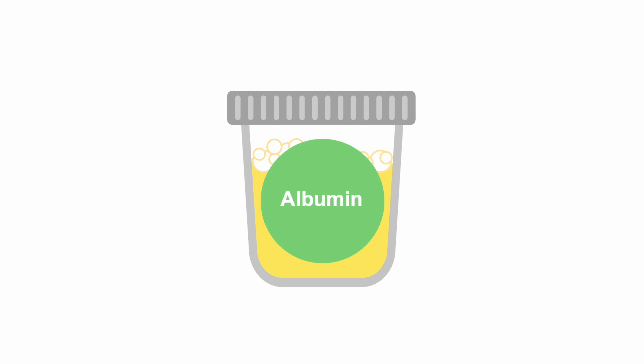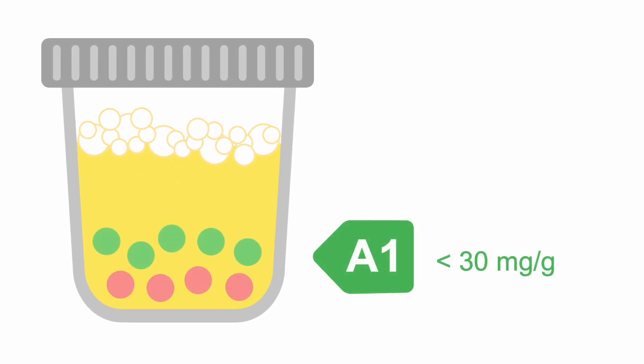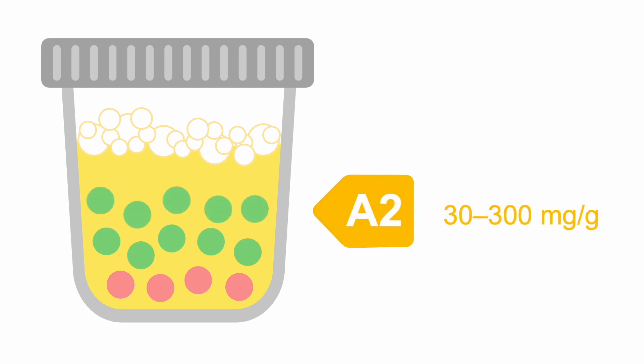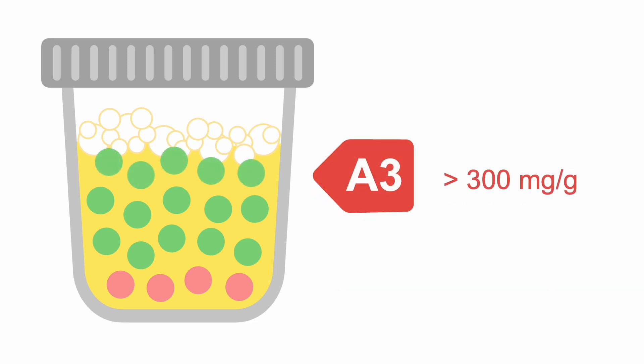But staging CKD also involves staging albuminuria. The degree of albuminuria is classified as A1, where the urine albumin creatinine ratio, or ACR, is less than 30 milligrams per gram. A2, where the ACR is between 30 and 300 milligrams per gram. And A3, where the ACR is greater than 300 milligrams per gram.